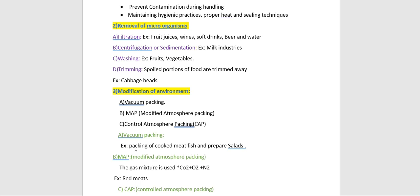Vacuum packing is used for cooked meat, fish, and prepared salads. In modified atmosphere packing (MAP), a bulk or retail pack is flushed through with a gas mixture of carbon dioxide, oxygen, and nitrogen. Carbon dioxide is included for its inhibitory effect. Nitrogen is non-inhibitory but prevents pack collapse when high concentrations of carbon dioxide are used. Oxygen delays the development of oxidative rancidity. MAP is used to preserve products such as dried mixes.